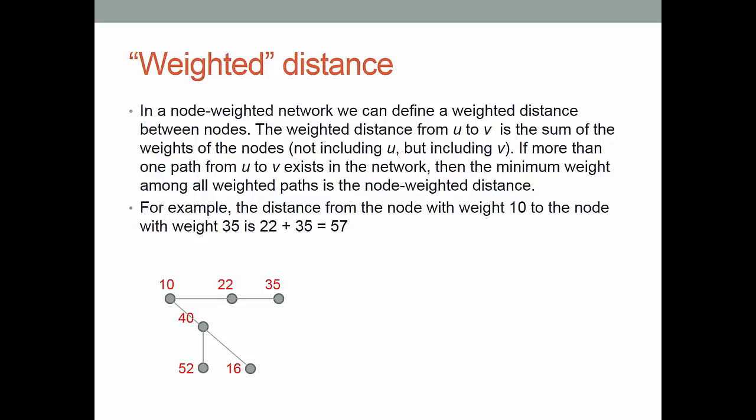The last thing for this lesson is we are going to modify the idea of distance if we include a weight assigned to each node. So for example if we look at the three nodes that are weighted 10, 22, and 35 respectively. The distance without considering the weights of the nodes from the node weighted 10 to the node weighted 35 is a distance of 2.